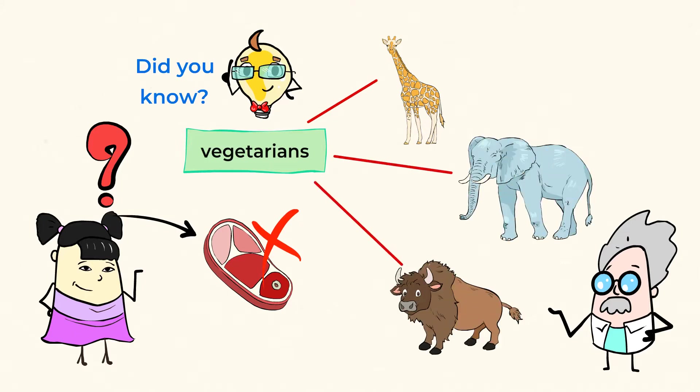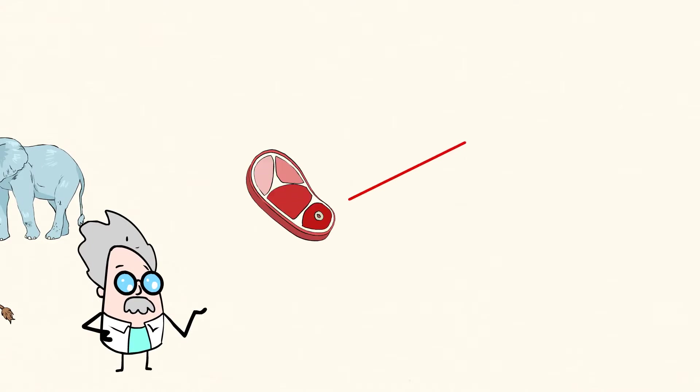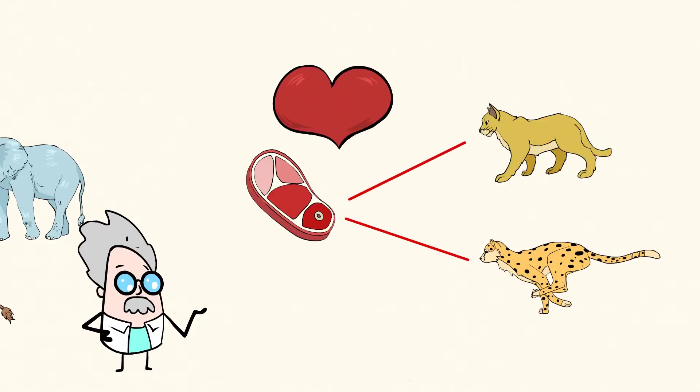Giraffes, elephants, bison, and many others. And then, there are other animals that only eat meat. Let's jump in and take a look at a few different animals and the types of food they eat.